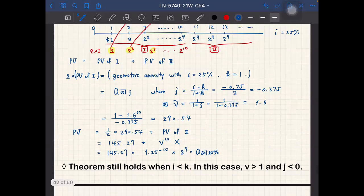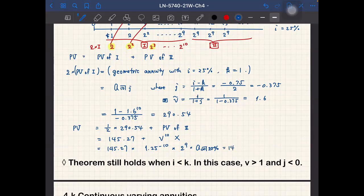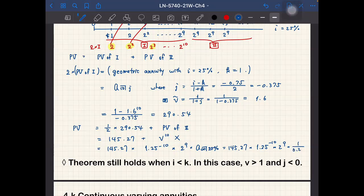So this is equal to 145.27 times 1.25 to the negative 10th power, 2 to the power 9, and times 1 over 0.25. And in total, this becomes 365.27.